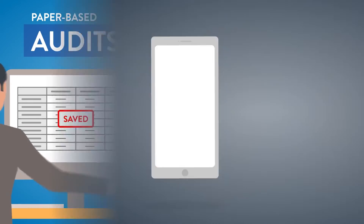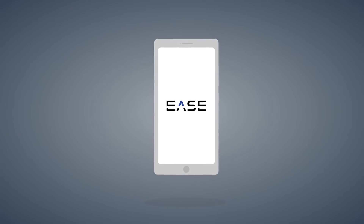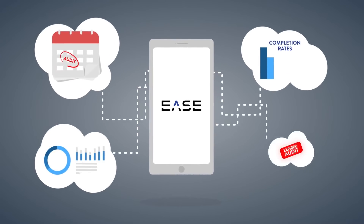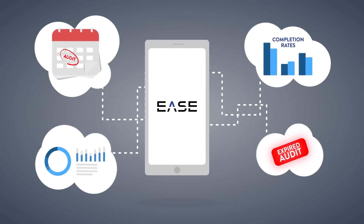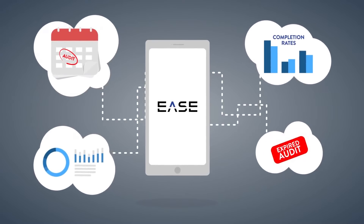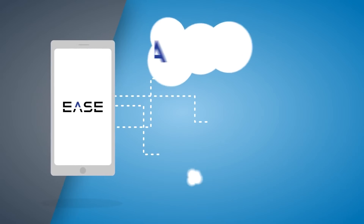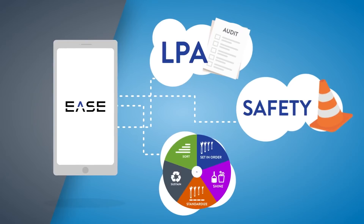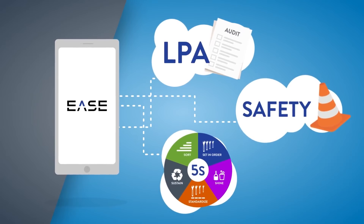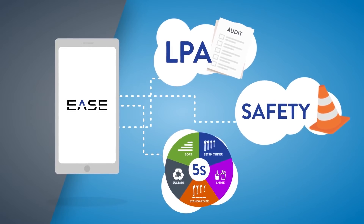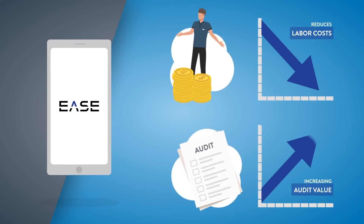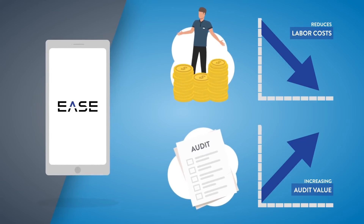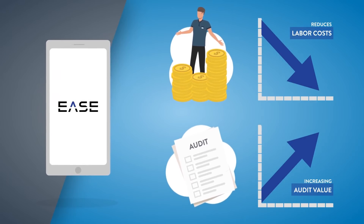Ease is the revolutionary mobile platform leading manufacturers use to simplify how they administer, conduct, and respond to plant floor audits. Best-in-class support for layered process audits, plus safety, 5S, and more — drastically reduces labor costs while increasing audit value.